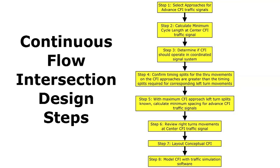Here I'm showing a series of design steps that I think one should follow with a continuous flow intersection. The following slides will go into each step in more detail. I'm hoping in the next few weeks to have an interactive spreadsheet through Google Docs that will summarize these steps, where you'll be able to enter design parameters and get suggested lengths for the CFI.